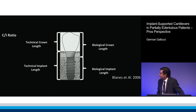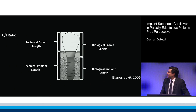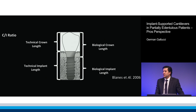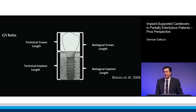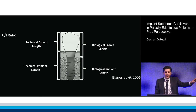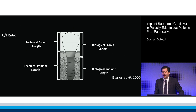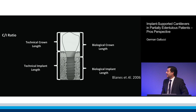In order to understand that, we need to define what is called the crown-to-implant ratio. A cantilever is nothing other than a laterally increased crown-to-implant ratio — you're hanging a tooth from the implant. Instead of going vertically, you're going laterally.